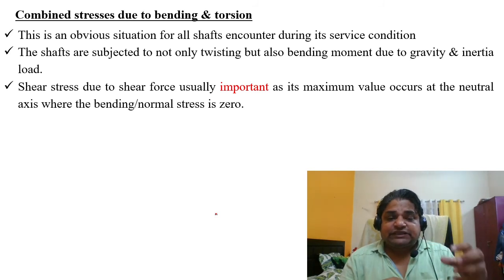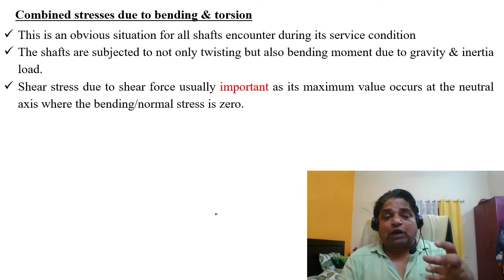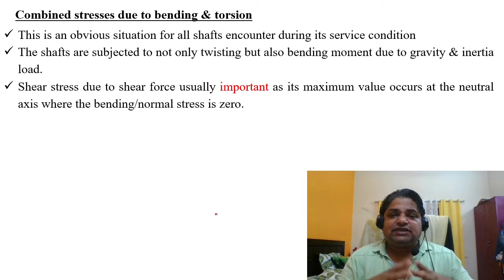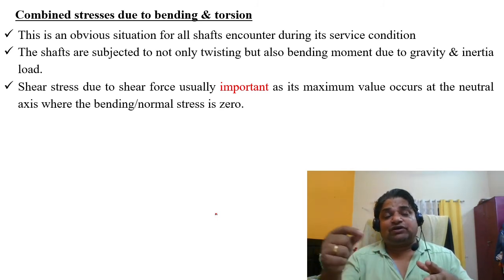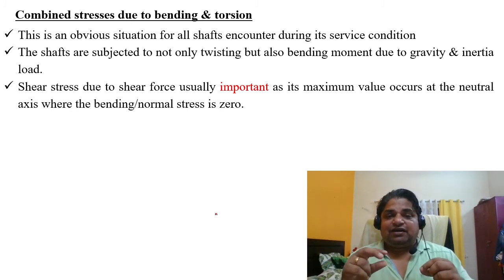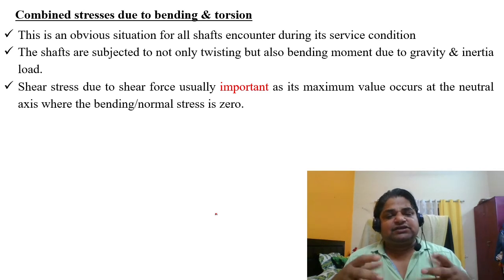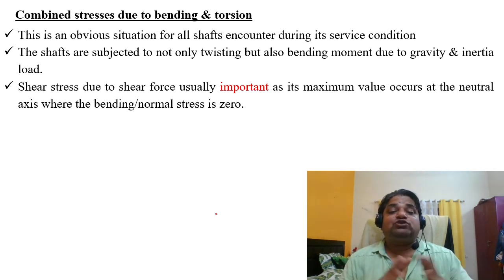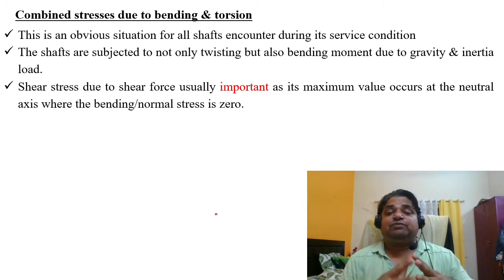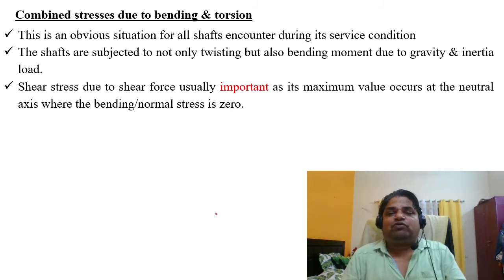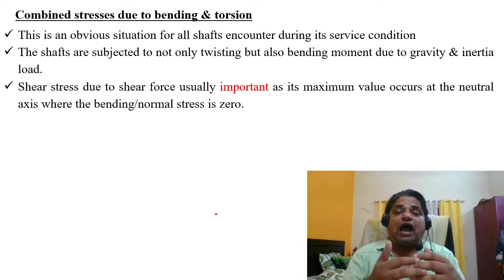From our earlier discussion of stresses on inclined planes and principal stresses, τ_max = (σ₁ - σ₂)/2. Interestingly, if only bending stress exists, τ_max = σ/2 — the shear stress is automatically half of the normal stress. This may not be true for composite beams or anisotropic materials, since nowadays we use different kinds of materials.